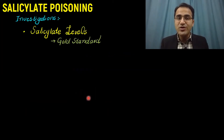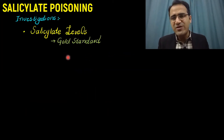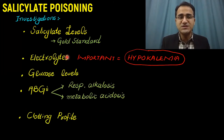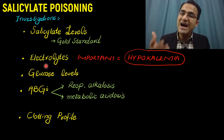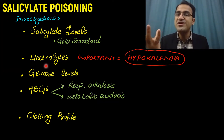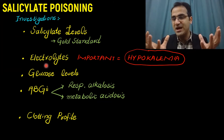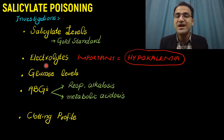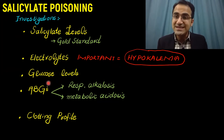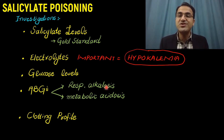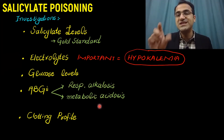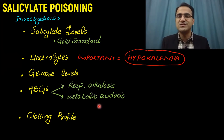Investigations in salicylate poisoning include salicylate levels, which are the gold standard test. Electrolytes must be done — since salicylate poisoning is associated with hyperventilation and respiratory alkalosis, and alkalosis is associated with hypokalemia, you would see hypokalemia in these patients. Glucose levels must also be checked as it can cause hypoglycemia. ABGs must be done to assess the metabolic disturbance, showing respiratory alkalosis initially and metabolic acidosis later, or most often a mixed picture of both.